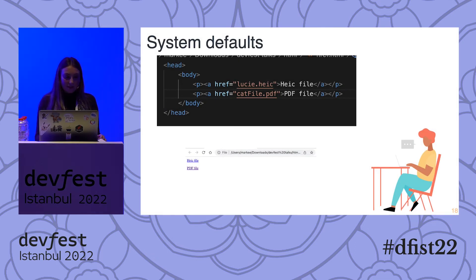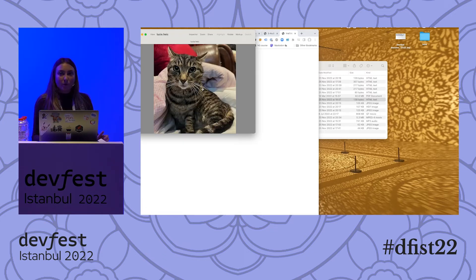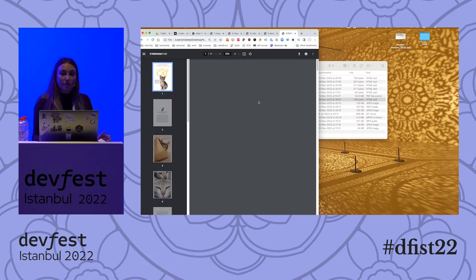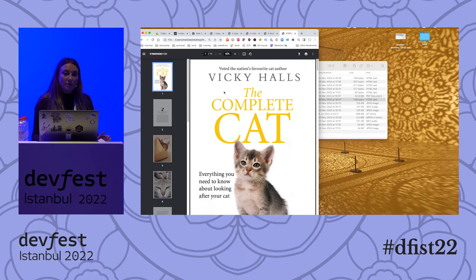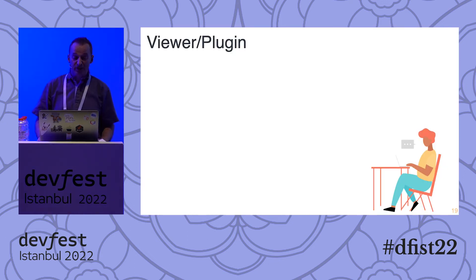Now I'm going to show you some of the system defaults. The thing with system defaults is that you can view the file, but you can't really do anything else with it. If we look at the HIC file here, we can see the image, but that's pretty much all we can do. And with a PDF file, it brings it up in a viewer — one thing to note is each browser type will have a different viewer style; this is the Chrome one. But again, we can view it nicely — that's about all we can do with it. If you want to edit it, then you'll need to convert it.